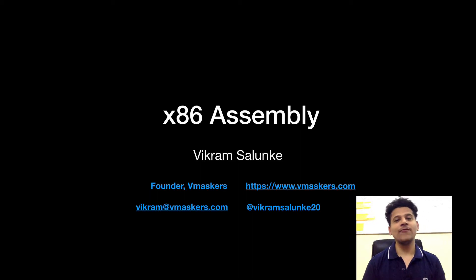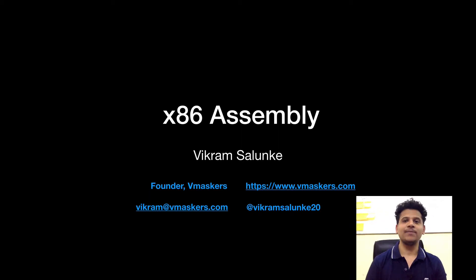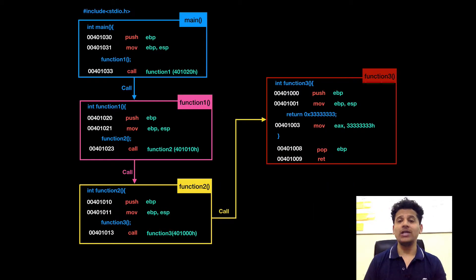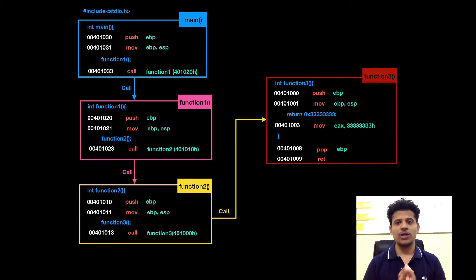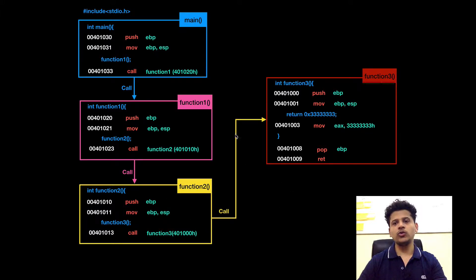Hey everyone, I am Vikram Salam and welcome to the X86 assembly. In this video, we will continue our conversion from C to assembly. We will only see half of the program; the other half we will see in the next video. The thing we are going to see is main calling function 1, function 1 calling function 2, and function 2 calling function 3.